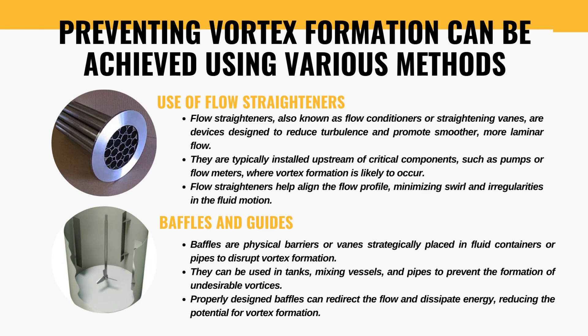Imagine you are in charge of a fluid system and you need to ensure that it operates effectively and safely. Here are some methods and strategies to make it happen. The first is the use of flow straighteners. Flow straighteners, also known as flow conditioners or straightening vanes, are devices designed to reduce turbulence and promote smoother, more laminar flow. They are like the traffic cops of the fluid, keeping things smooth and orderly. They are generally installed upstream of critical components like pumps or flow meters to prevent massive vortex formation.